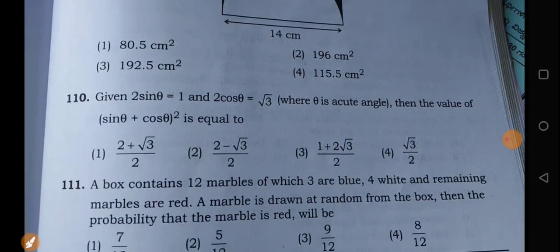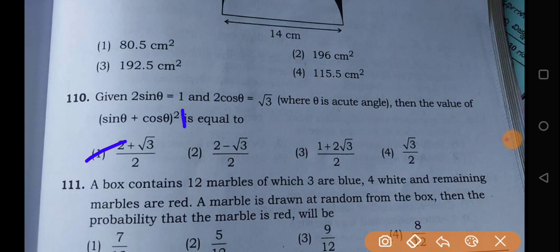Similarly, you have a question. Here, the option is the right one. It will be easy. It will be sin theta, 1 by 2, cos theta, root 3 by 2. And after that, a plus b whole square. Or else, sin square theta plus cos square theta is going to be like 1. Direct.